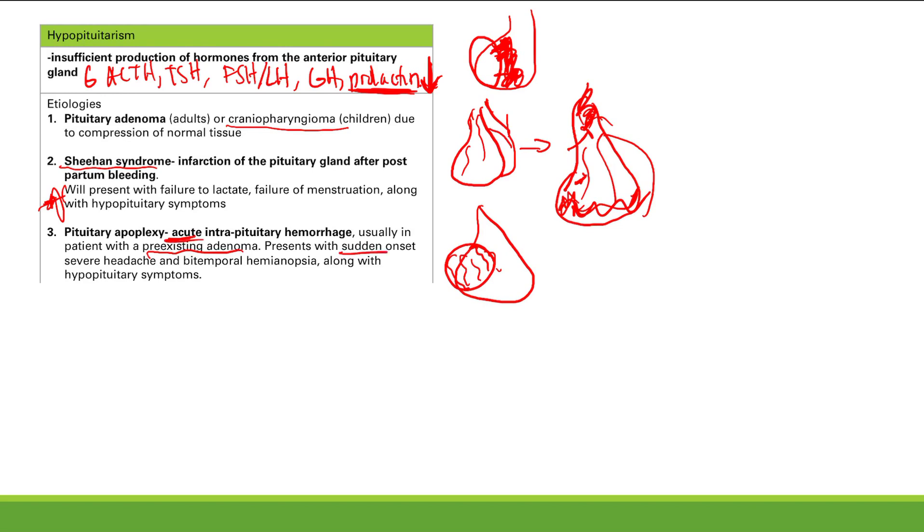And this is an acute thing, so you're going to get a sudden onset headache, bitemporal hemianopsia, and you're going to get hypopituitary symptoms. So if you see this and hypopituitary syndromes, your answer is pituitary apoplexy.